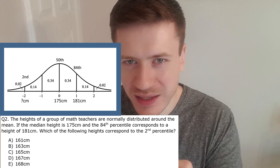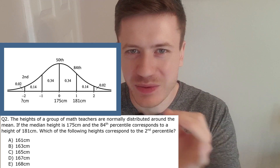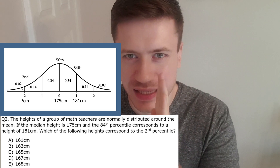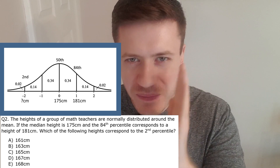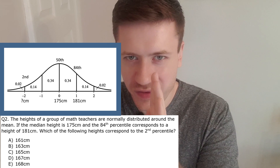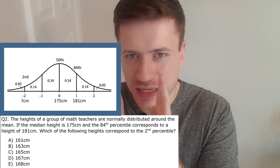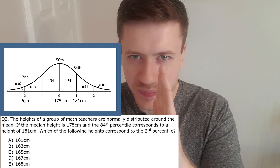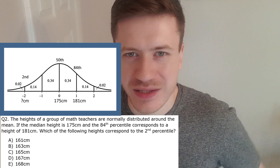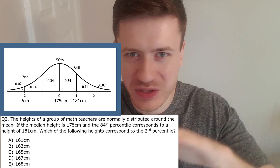Now recall that the median height is 175 centimeters. Since the median equals the mean in a normal distribution, the mean is 175 centimeters. One standard deviation above the mean is 181 centimeters, so the difference between 181 and 175 is 6 centimeters — that's one standard deviation. So 6 centimeters is our standard deviation for this normal distribution.